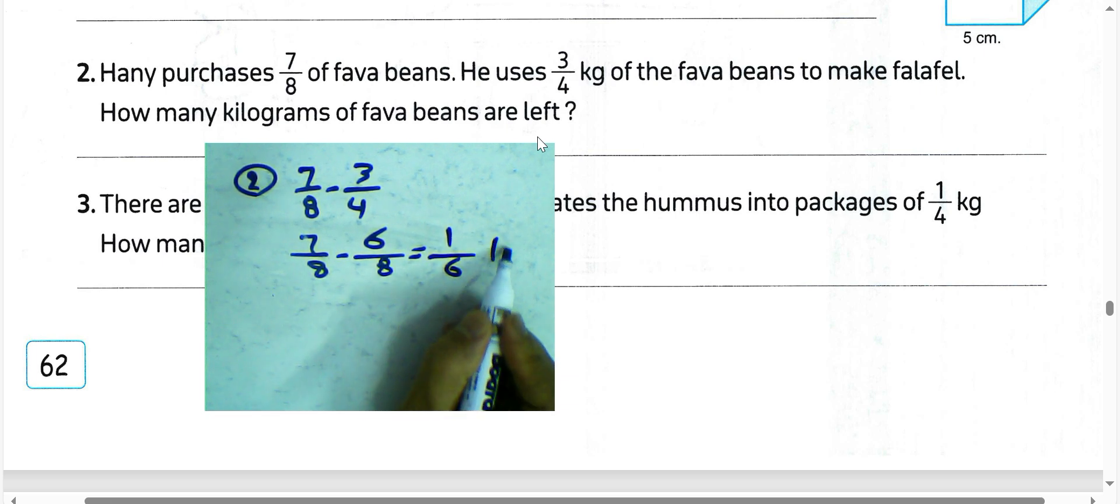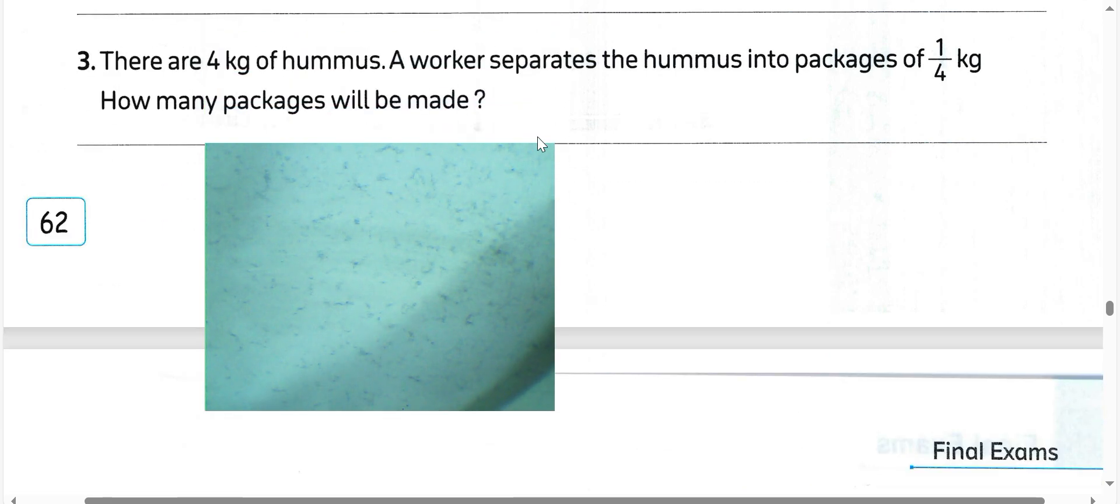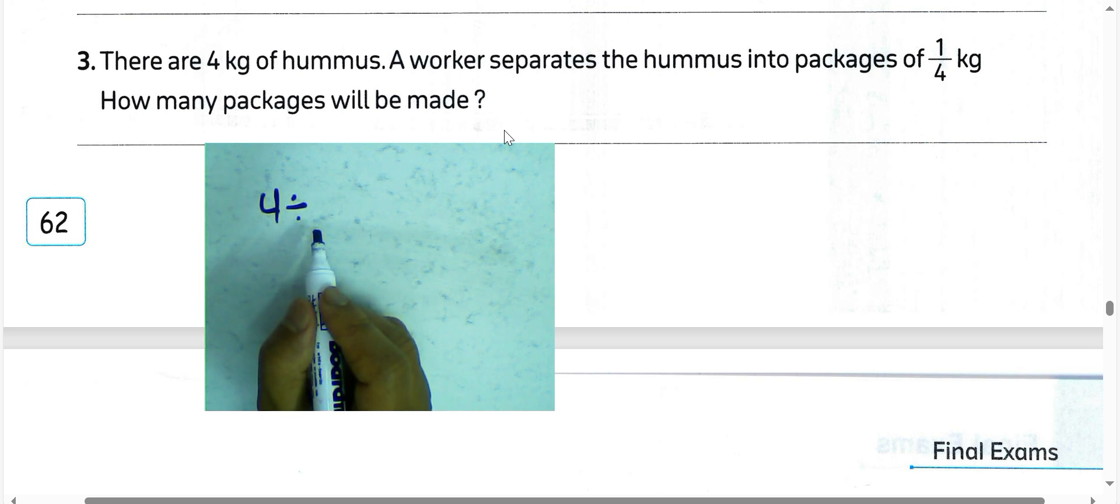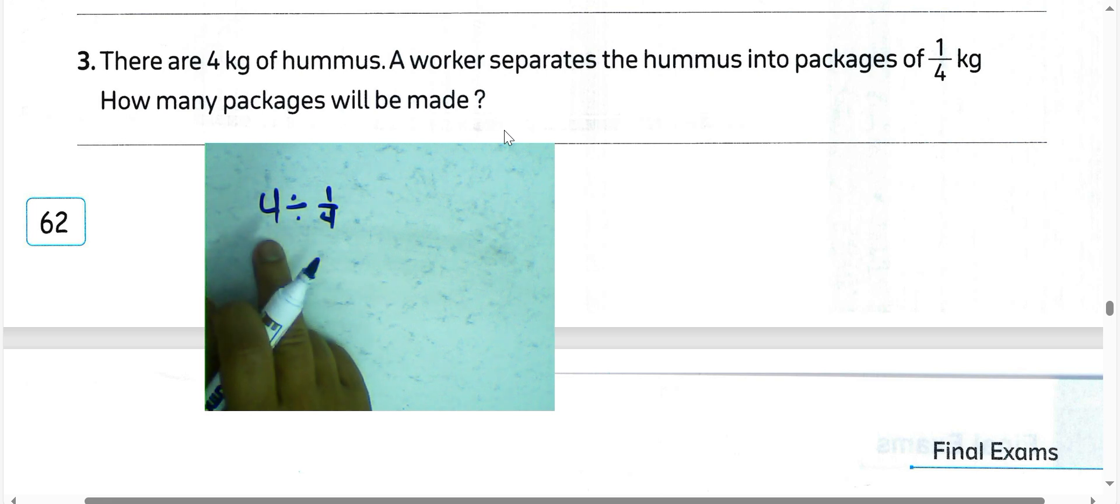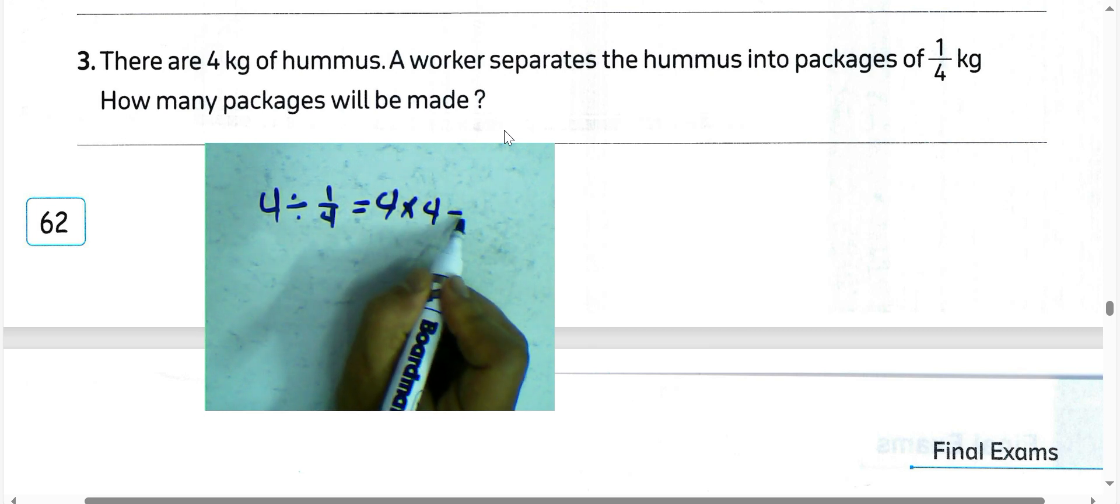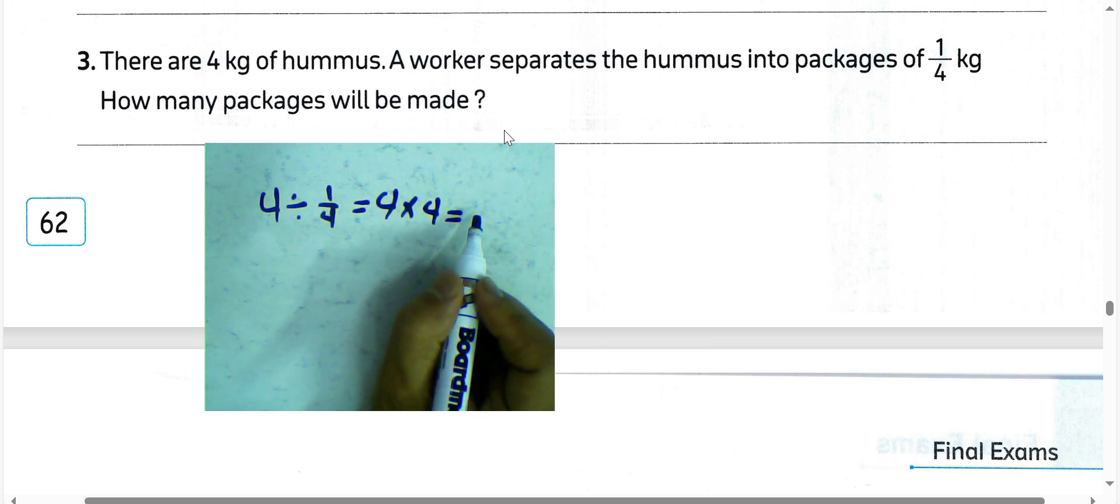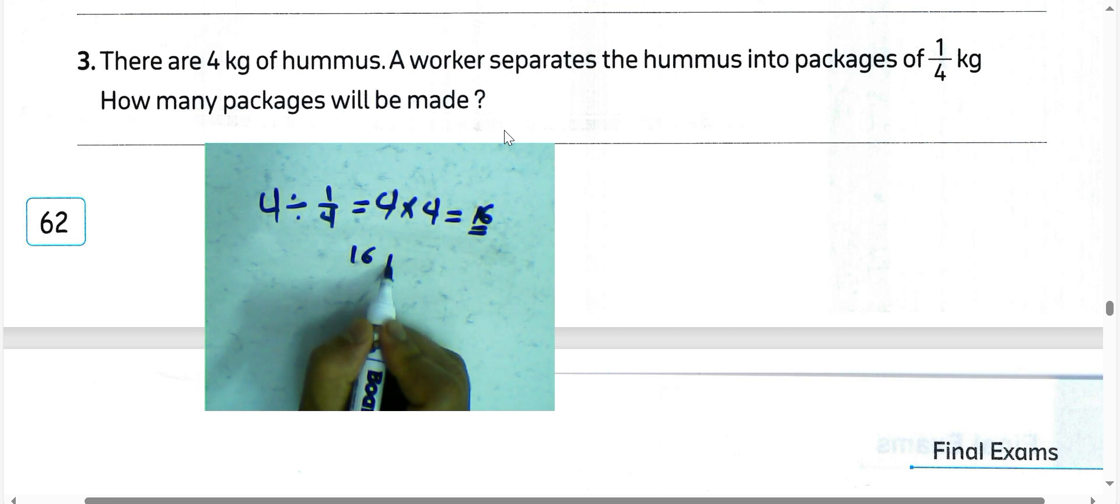Next question, there are 4 kg of hummus. The worker spreads the hummus into packages of 1/4 kg. How many packages will be made? We divide the total amount by the weight of each one: 4 divided by 1/4. Convert to multiplication: 4 times 4 equals 16. The number of packages will be 16.